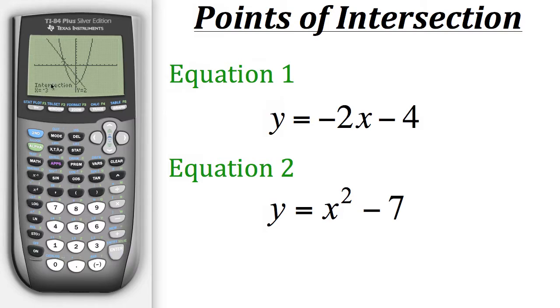Now from there we could see that the intersection point on the left side here occurs at the point negative 3, 2. So one solution, or point of intersection, occurs when x is negative 3 and y is 2.